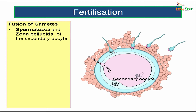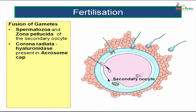Now it is time for the fusion of gametes. The spermatozoa will fuse with the zona pellucida of the secondary oocyte. At the time of ovulation, we have the secondary oocyte and one polar body, the first polar body. The spermatozoa will be fusing with the zona pellucida which is covering the secondary oocyte. In order to fuse with the zona pellucida, the corona radiata has to be removed first, and that is made possible by hyaluronidase.